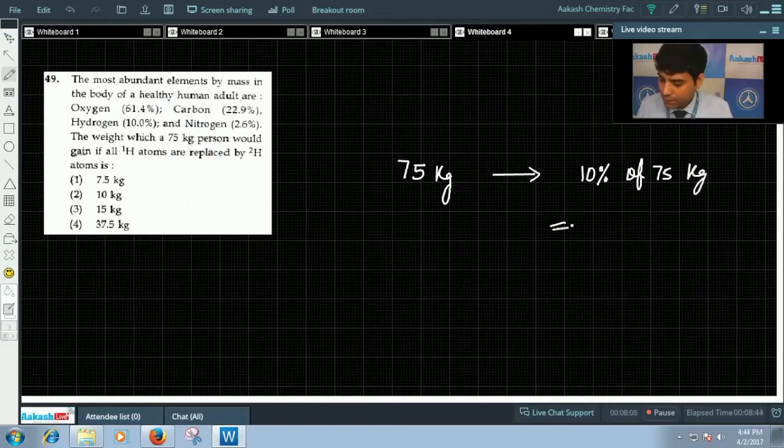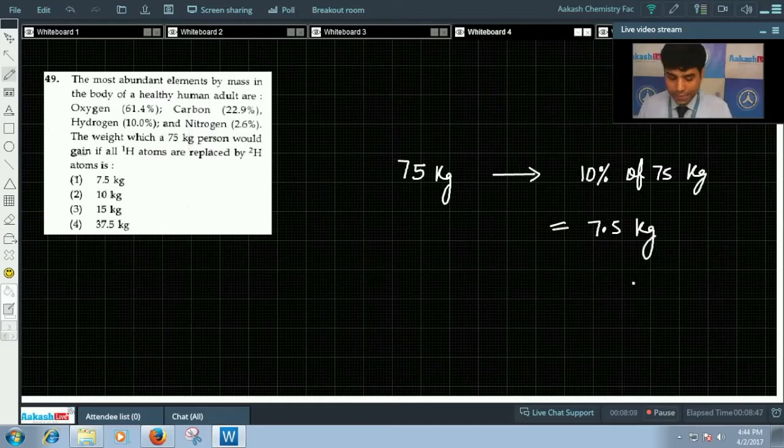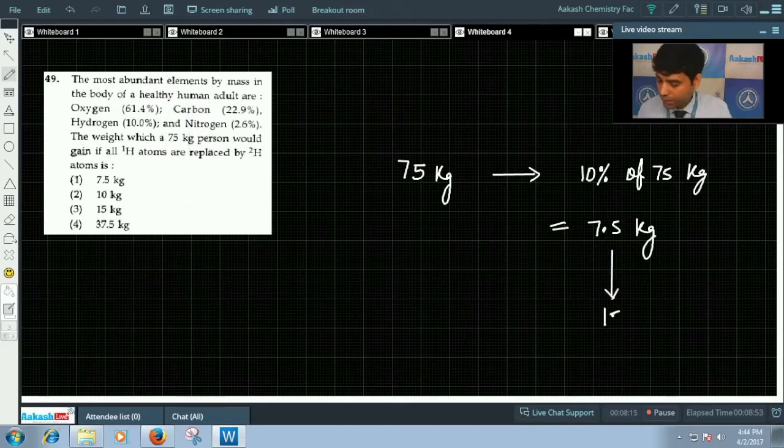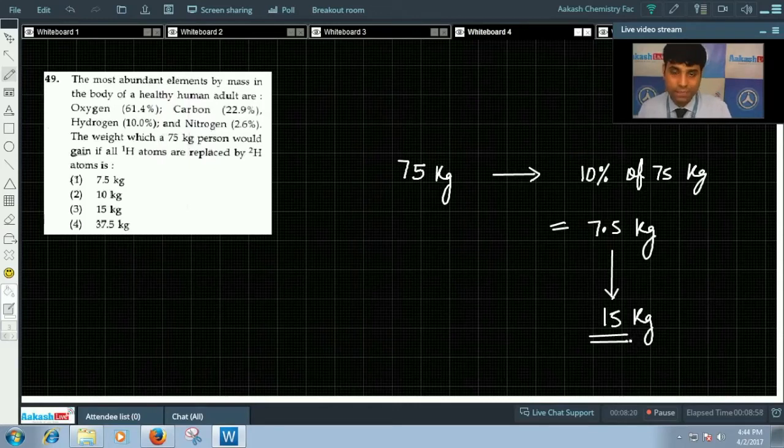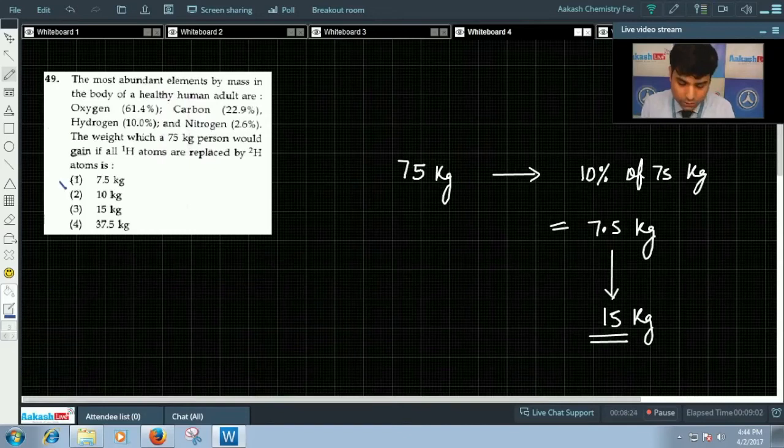As we can see, mass of hydrogen is doubled, so 7.5 kg will change to 15 kg. That is, there will be a total increase of 7.5 kg in the mass. Hence the correct answer for this question is option 1.